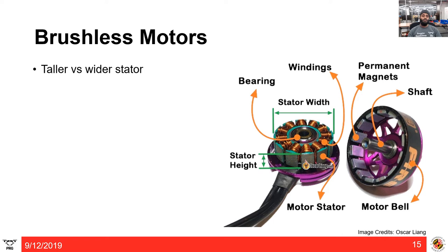Moving on to motors: before covering brushless motors, let's understand the difference between brushed and brushless motors. A brushed motor has a north and south pole acting like a magnet that causes rotation. A brushless motor has a three-pole system — by swapping any two of the three wires, you can reverse the motor's rotation direction. So if the motor was spinning clockwise and you swap two wires, it will then spin counter-clockwise.